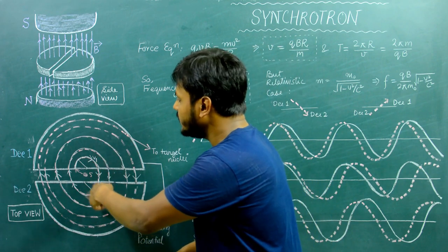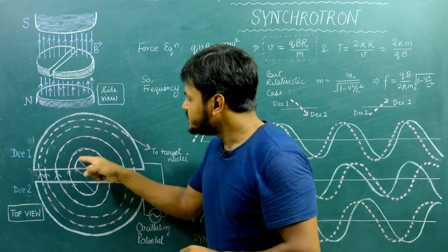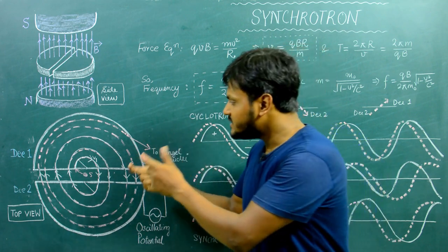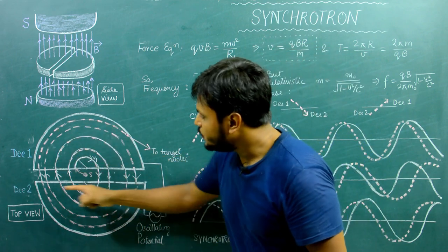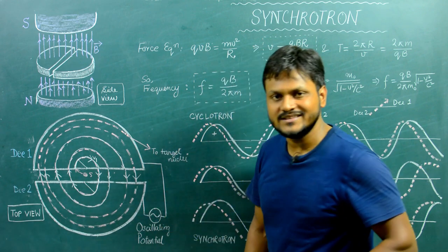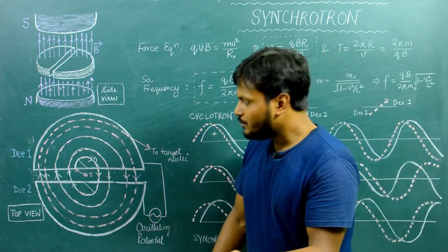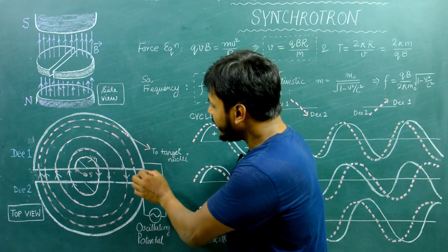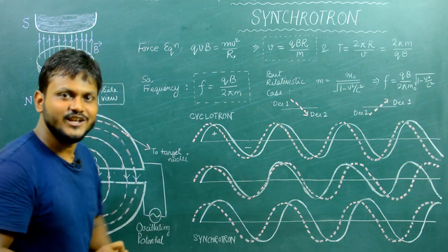The cyclotron takes advantage of circular motion in a perpendicular magnetic field to make the particle revolve repeatedly in a small region. However, circular motion only changes the velocity direction, not the magnitude. To increase the velocity, D1 and D2 are connected to an oscillating potential — essentially an AC voltage — creating a potential difference between the two halves. This oscillating potential alternates so that D1 and D2 switch between positive and negative, generating an electric field either from D2 to D1 or from D1 to D2.